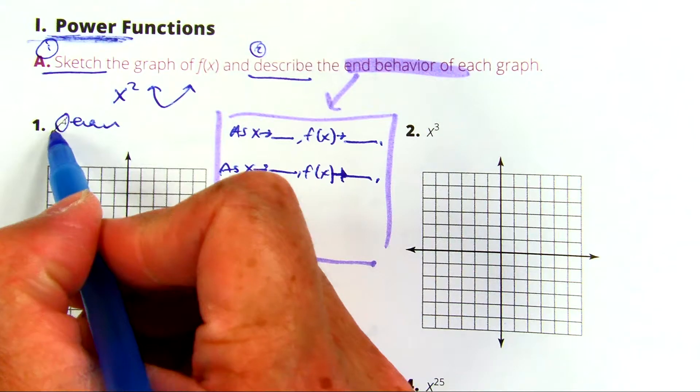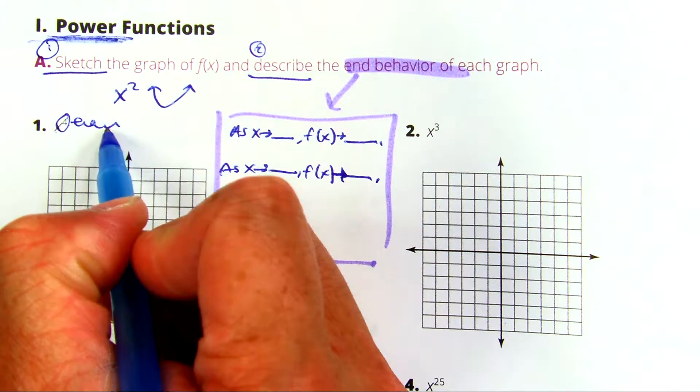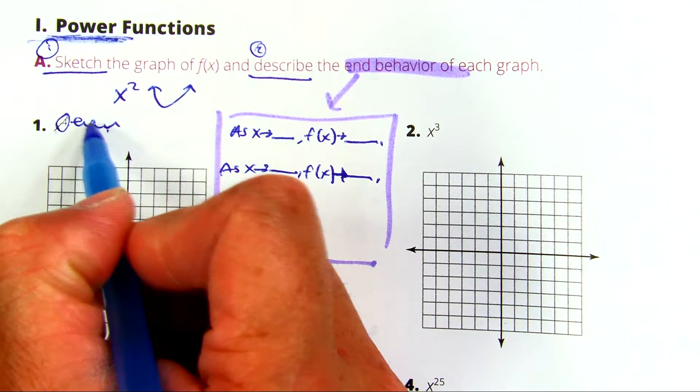I recognize that x to the fourth, fourth is an even number, so they call this an even degree.